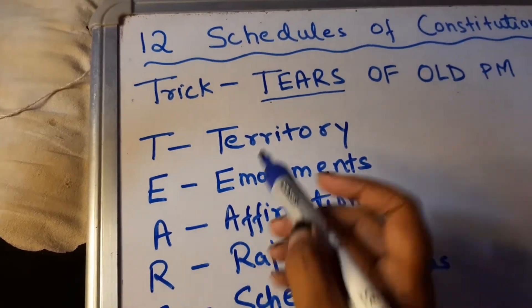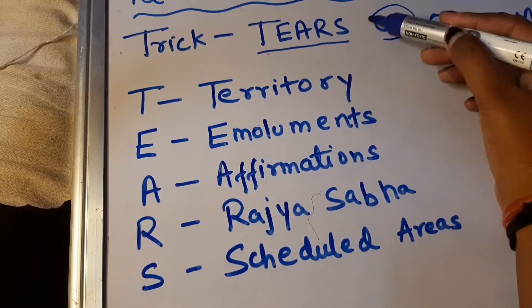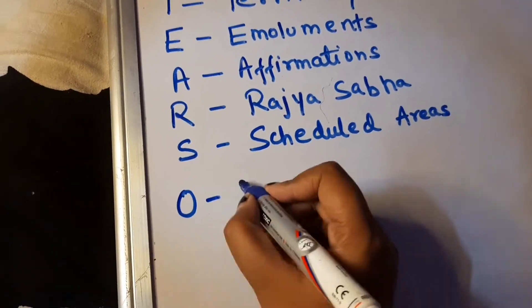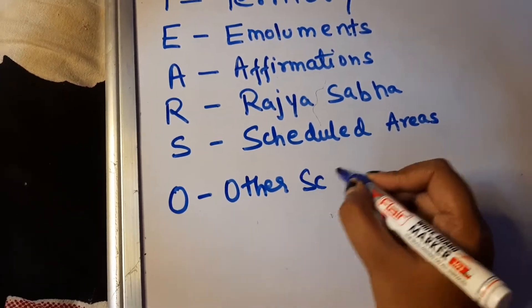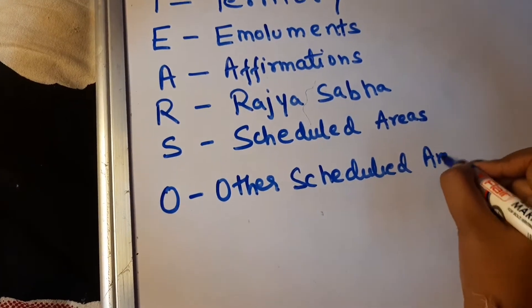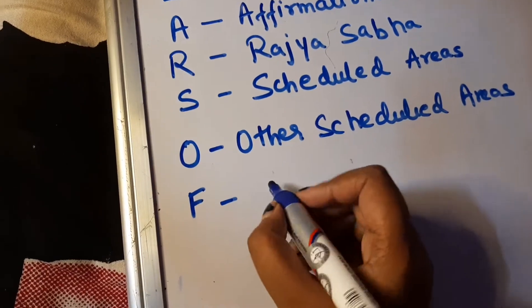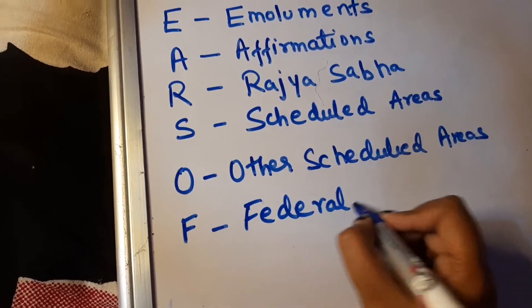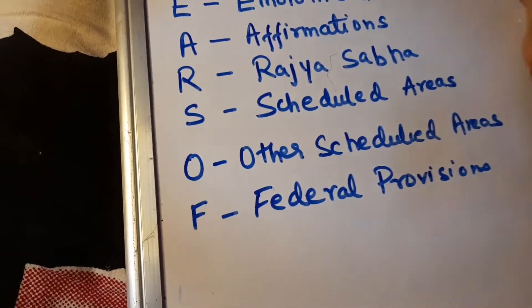Now let's simplify 'OF'. O gives us Other Scheduled Areas, so Schedule 6 deals with other scheduled areas. F gives us Federal Provisions — Schedule 7 deals with federal provisions.